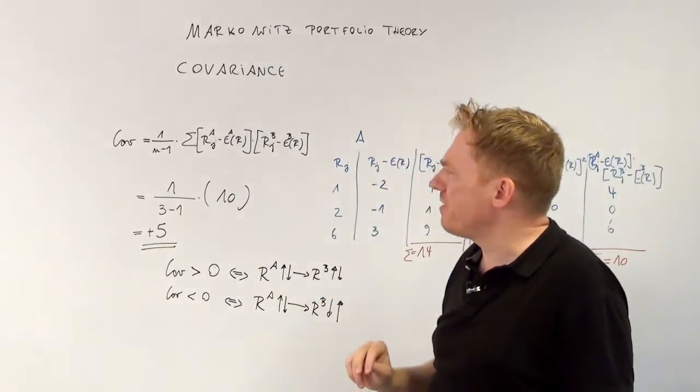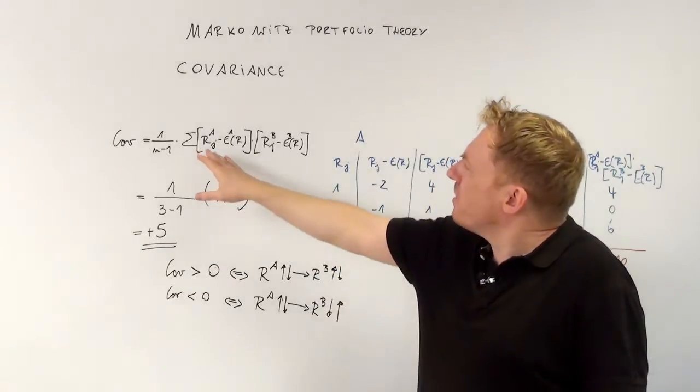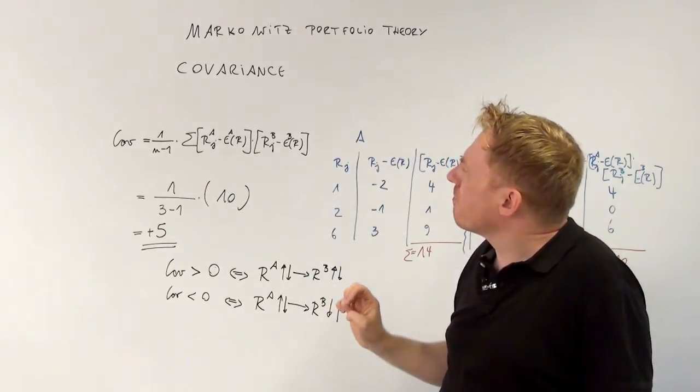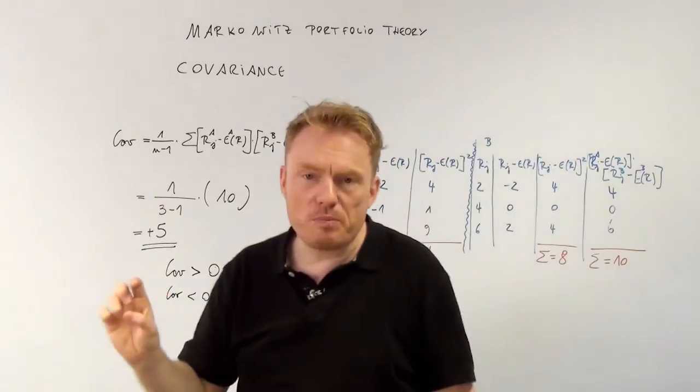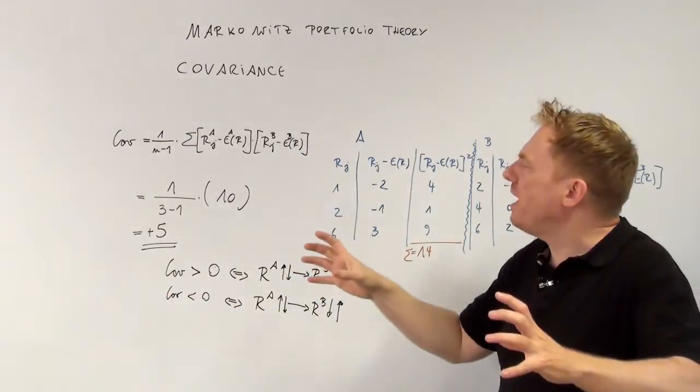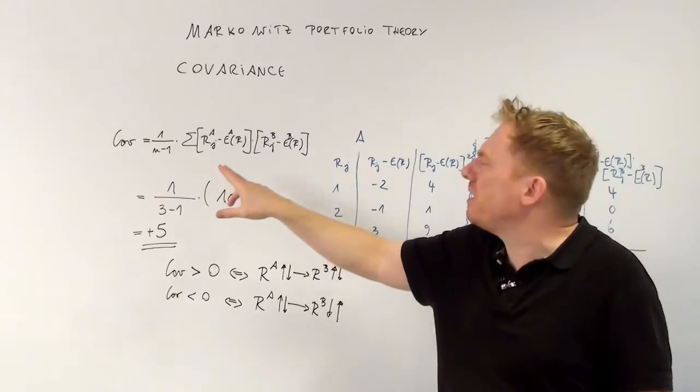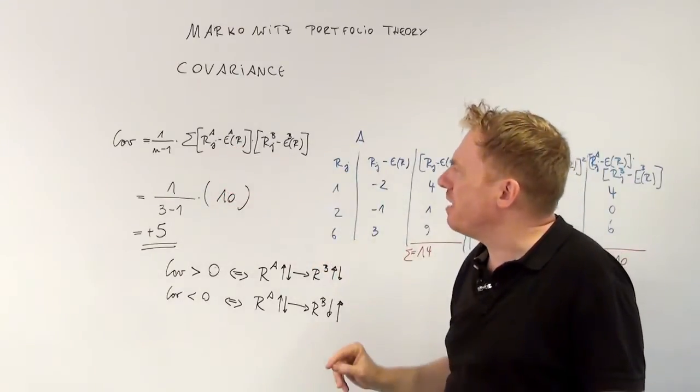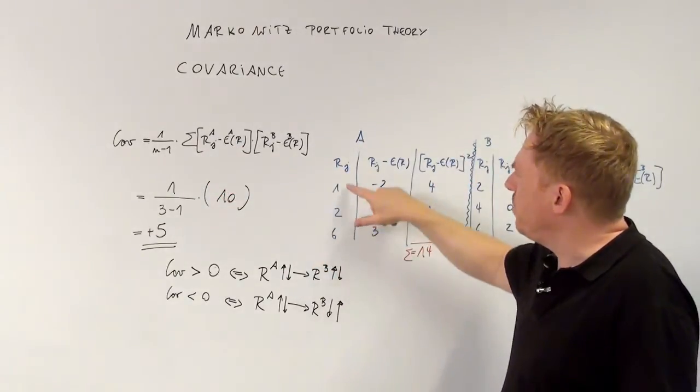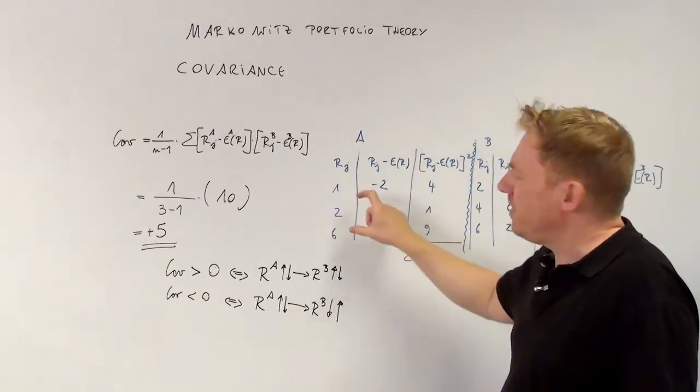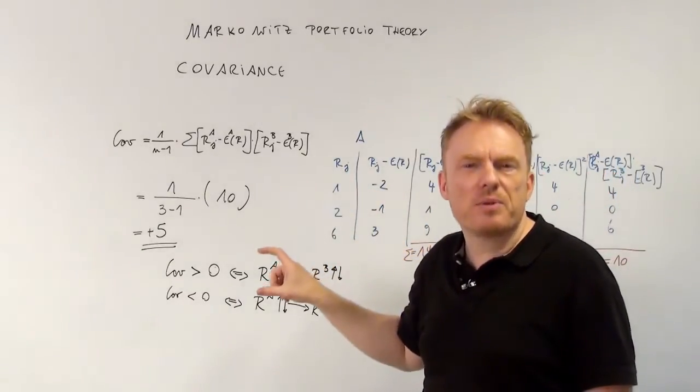1 divided by n-1 times this sum, which means that we first have to compute the expected value. Expected value for share A for example is, as we see, 1 plus 2 plus 6 is equal to 9.